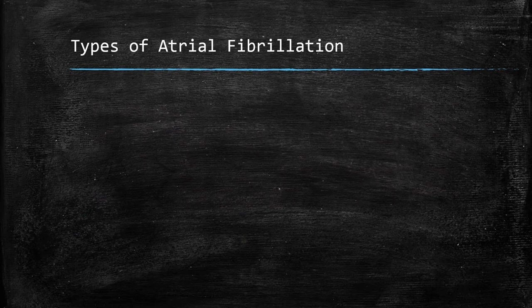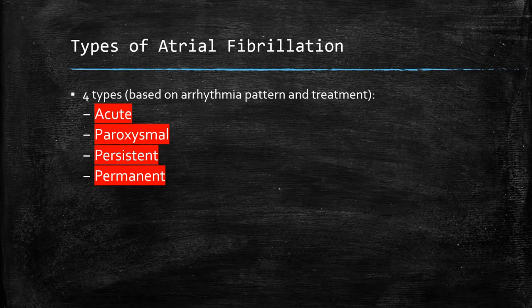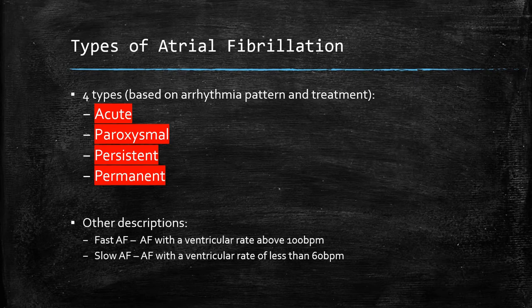Moving on to the types of atrial fibrillation, there are four: acute, paroxysmal, persistent, and permanent. Other descriptions of atrial fibrillation include fast AF with a ventricular rate above 100, and slow AF with a ventricular rate less than 60 beats per minute.